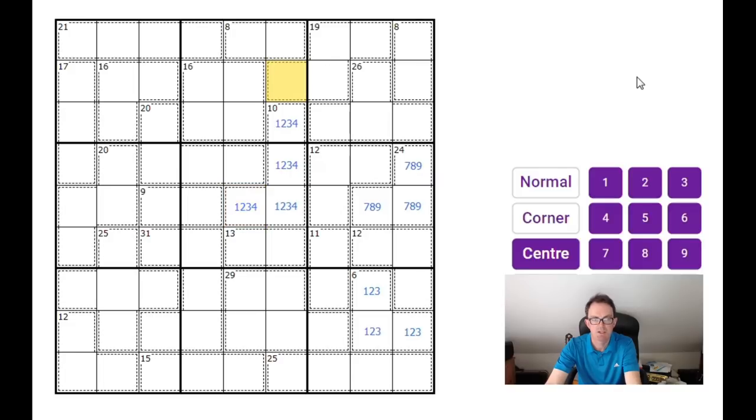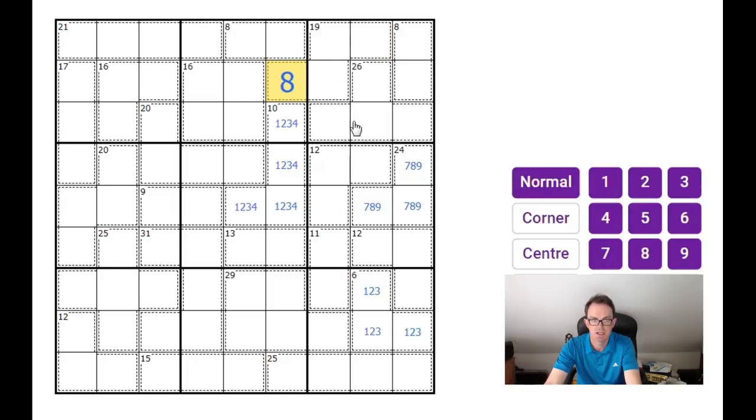But this cell we can write in the value of, using our old friend the 45 rule. The most important rule in killer Sudoku is that numbers from 1 to 9 add up to 45, and you know that every 3x3 box, every row and every column will contain the numbers from 1 to 9. So I know this box adds to 45, but it has an 8 cage and a 26 cage entirely contained within it. 8 and 26 add to 34, so I know these 3 cells must add to 11, and therefore this cell, to make up the 19, that's an 8.